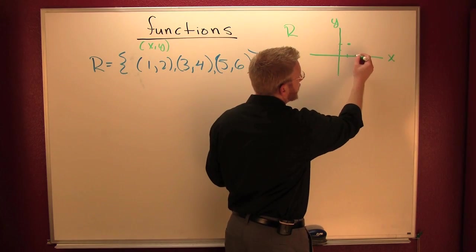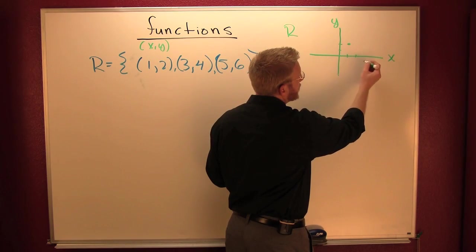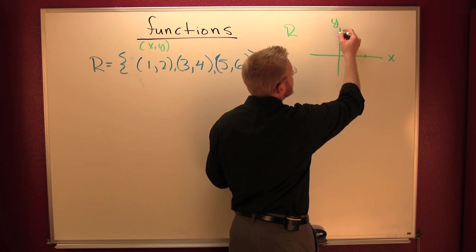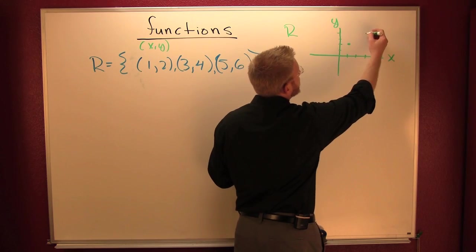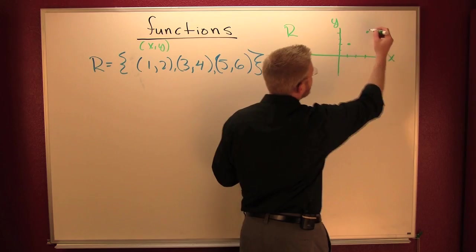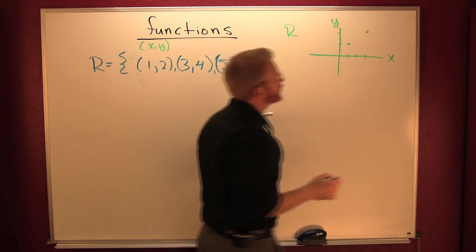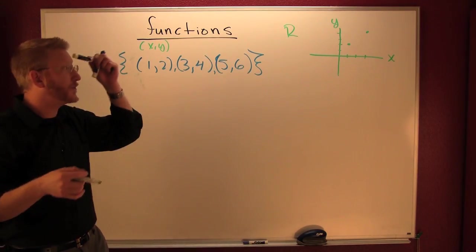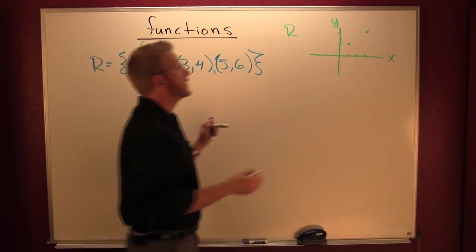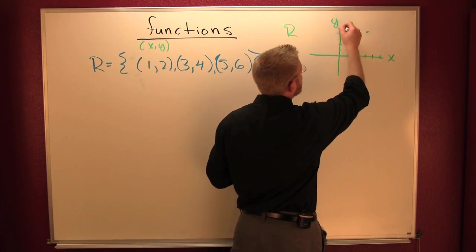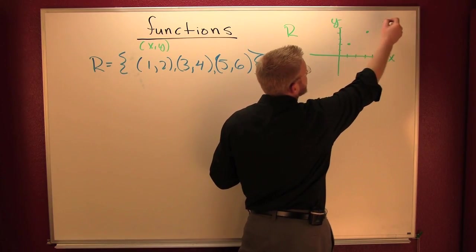When x is three, y is four. So here's one, two, three — and four. And let's put that last point on there: five, six.